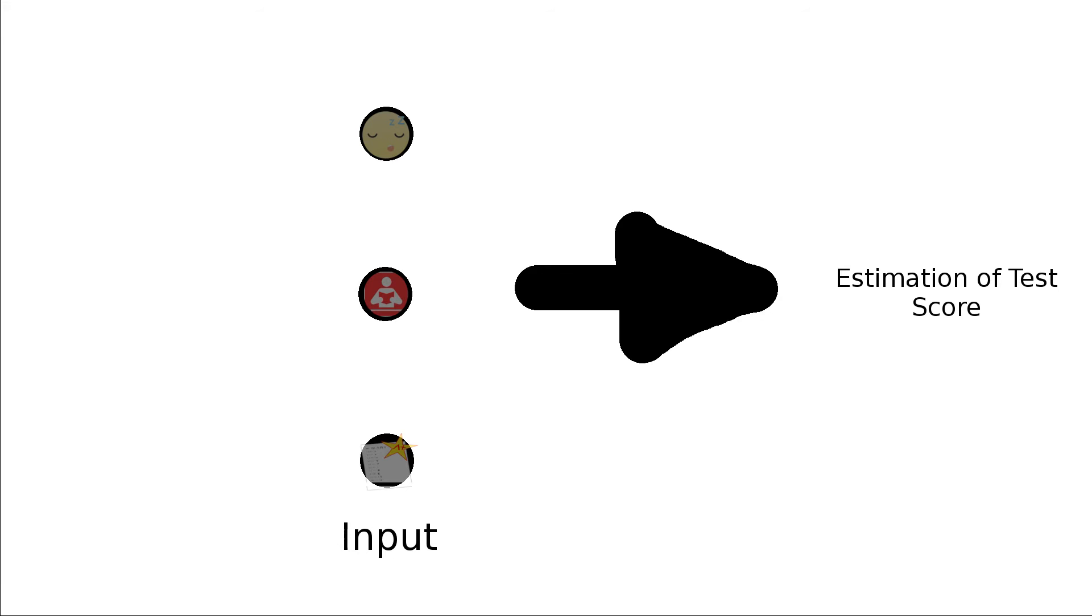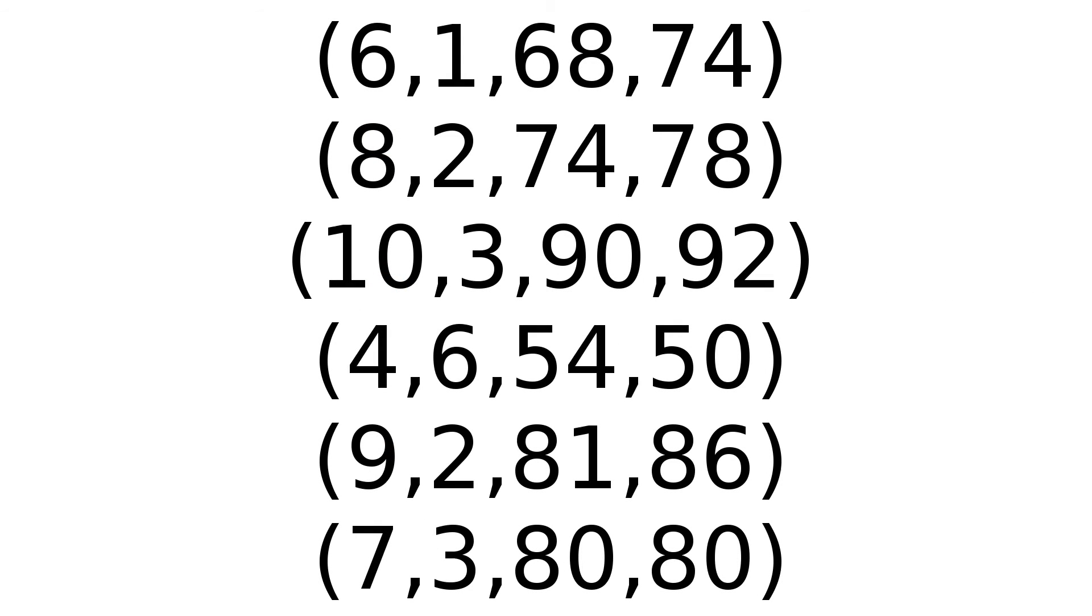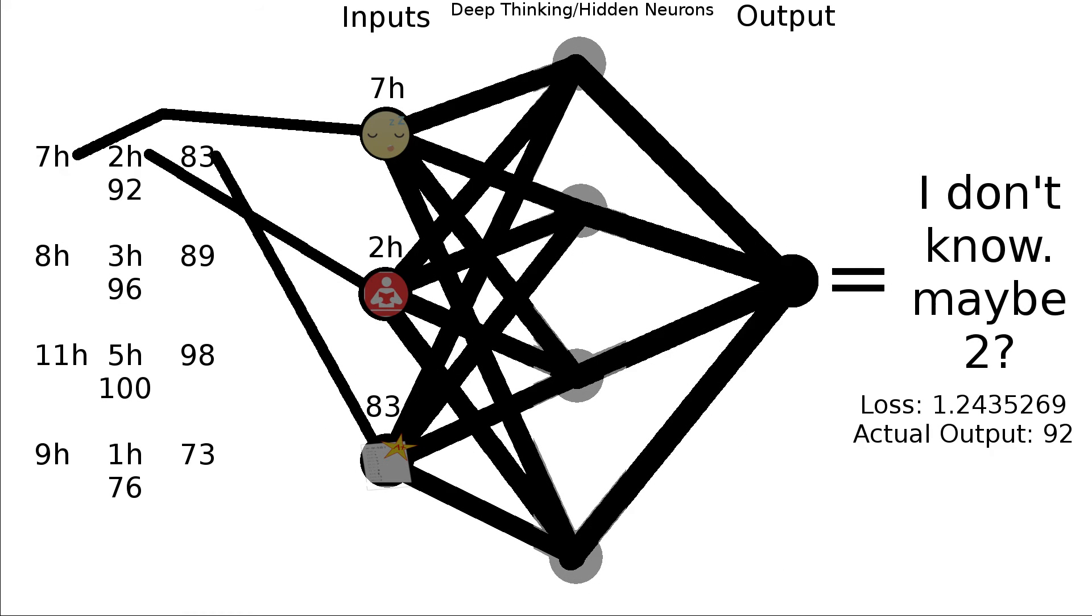Our neural network will try to predict a final test score based on these inputs. So before we could do this, we need to put in data that we know is true. So perhaps we have the school track all this information for all the students. Once we have all this training data, we could put it into the neural network, and the hidden neuron layer will begin to find relationships between the inputs.